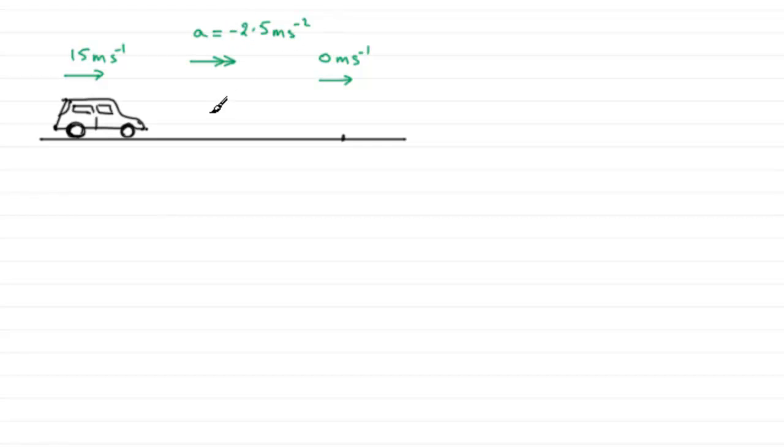We're going to find the time it takes to go from 15 meters per second to when it comes to rest. We can do this by applying the fact that acceleration equals the change in velocity over the time taken. If you rearrange this, you get the familiar formula v = u + at.